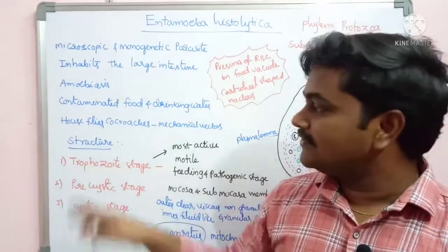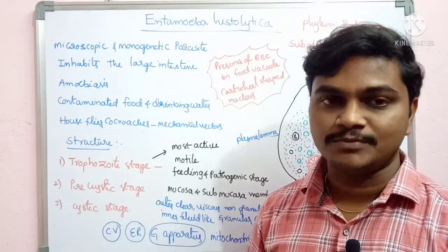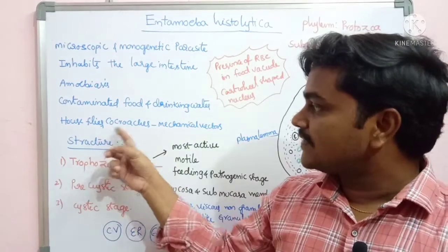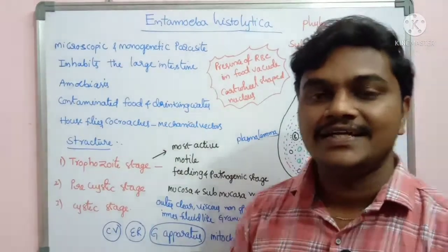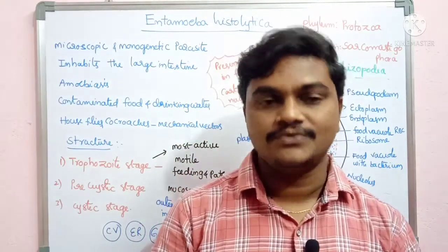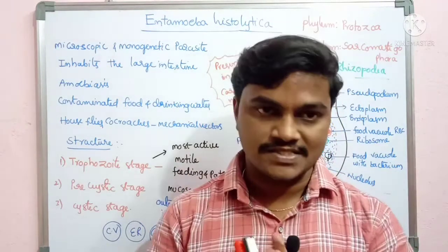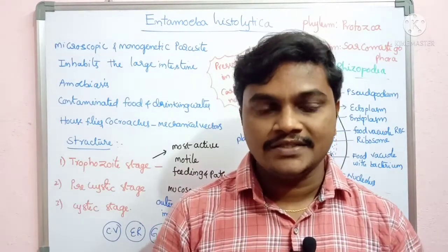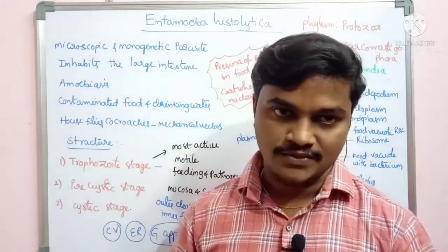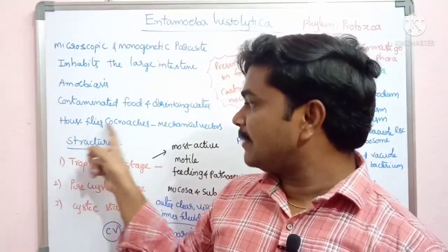There is no development of the parasite in the mechanical vectors. They only transmit the parasites from one person to another. So parasitic development does not occur in the mechanical vectors. Examples of mechanical vectors include cockroaches and houseflies.